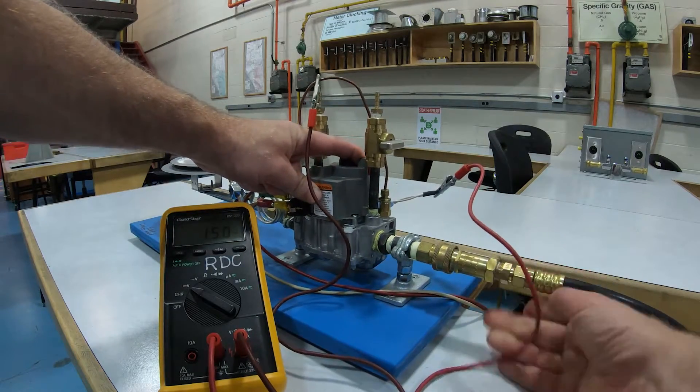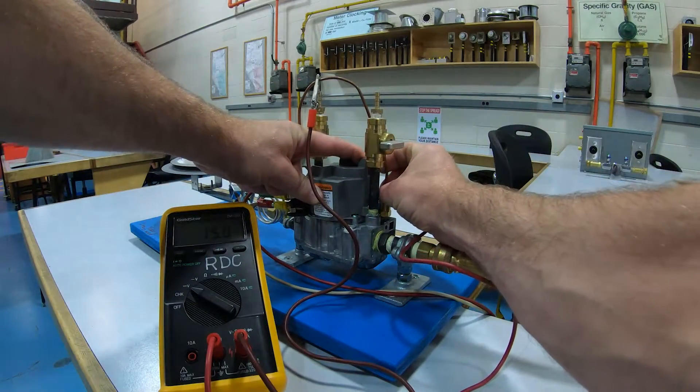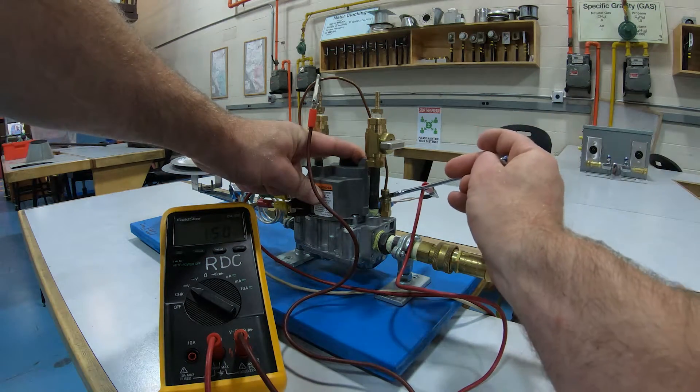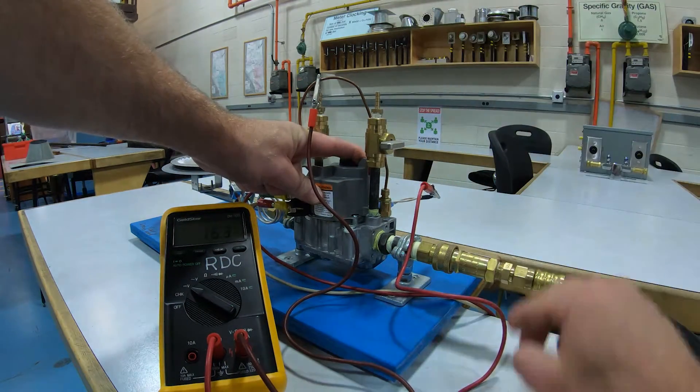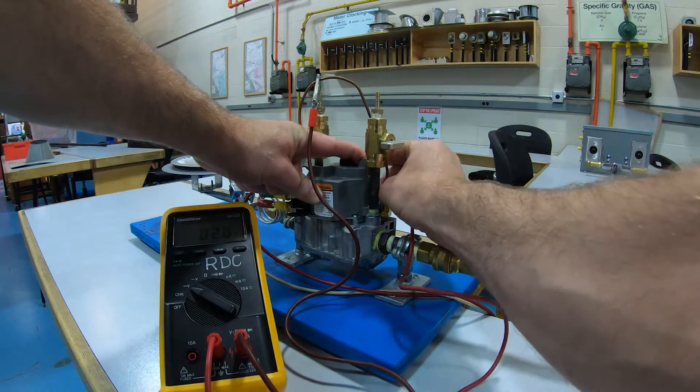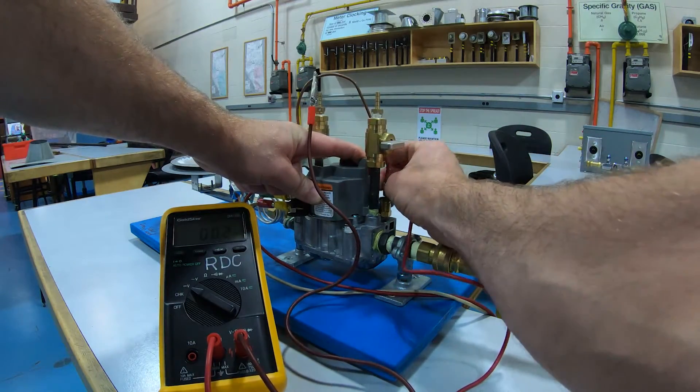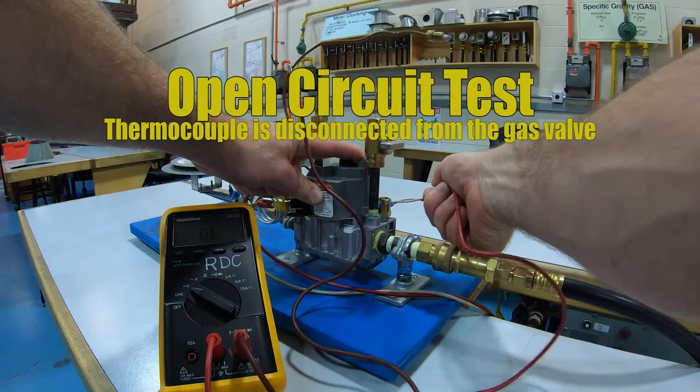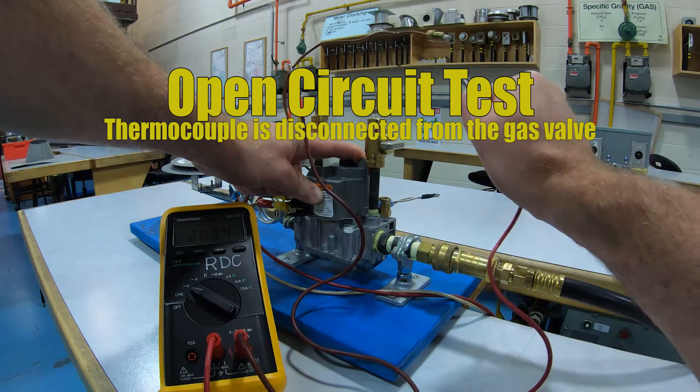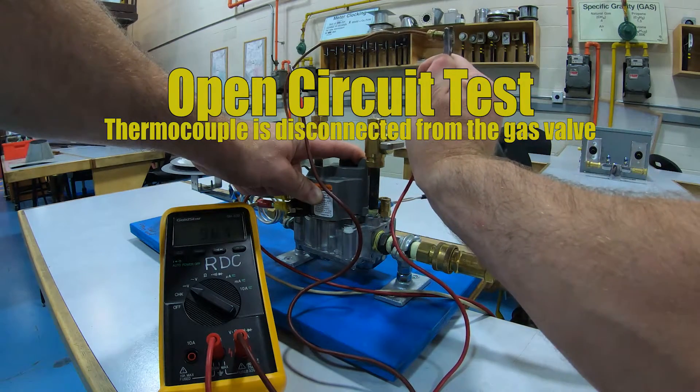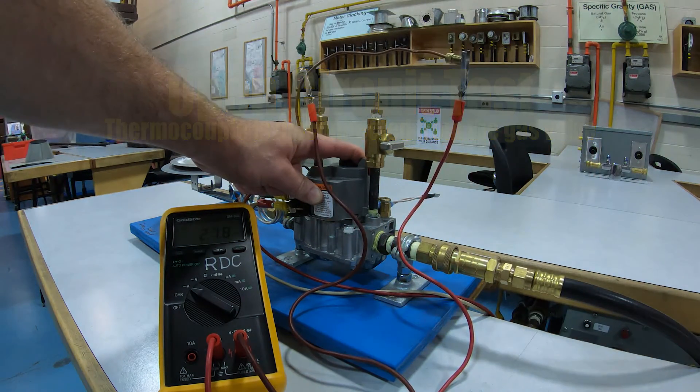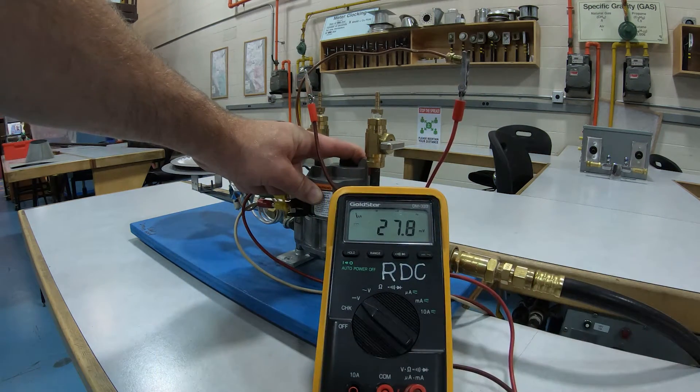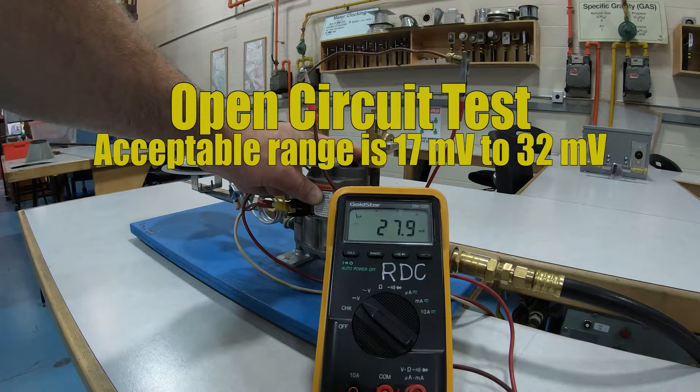I'm going to disconnect the thermocouple here, which I've got just a little bit tighter than hand tight. Now this is going to be hard. So the pilot is still burning in the background. I'm going to take this lead and stick it right onto the very nub in here. And look at that, we're at 27.9 millivolts.